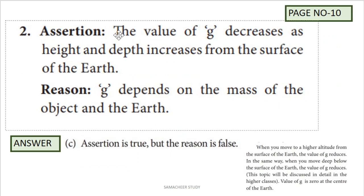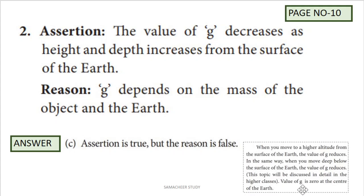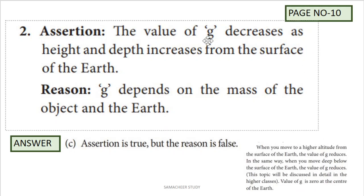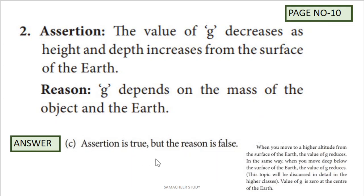Next question — Assertion: the value of g decreases as height and depth increase from the surface of the earth. Assertion is true, because at higher altitude g reduces, and when moving deep below the surface of the earth, the value of g also reduces. Reason: g depends on the mass of the object. This is wrong — g does not depend on the mass of the object. So the reason is false. The correct answer is option C: assertion is true but the reason is false.